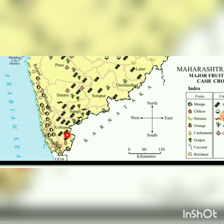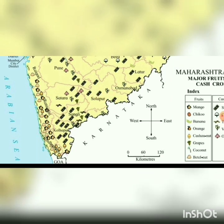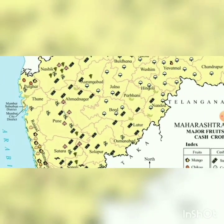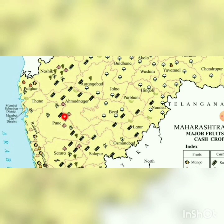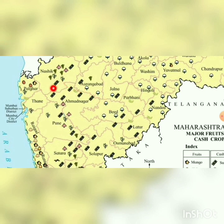In Kolhapur, sugarcane is grown on a large scale. In Satara, turmeric is a major crop. Solapur grows vegetables, sugarcane, and onions. Moving into the interior of Maharashtra, Ahmednagar is known for sugarcane. Areas marked with white buds on the map indicate cotton cultivation. In Nashik, sugarcane, vegetables, onions, and grapes are grown — Nashik is famous for grapes.